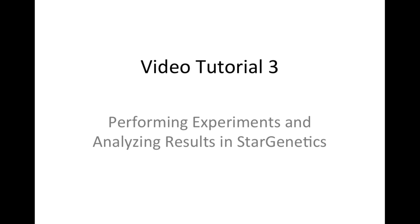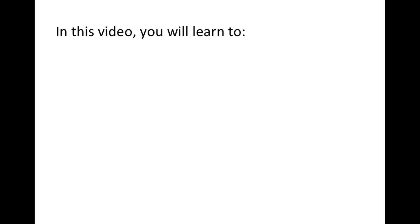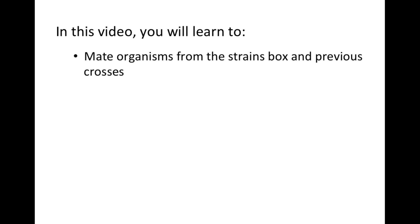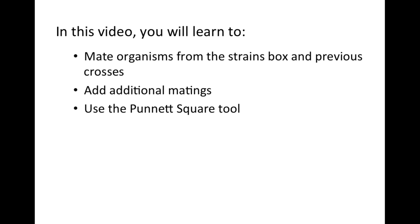Star Genetics video tutorial number three: performing experiments and analyzing results in Star Genetics. In this video, we will learn how to perform a series of crosses between organisms in Star Genetics, and how to analyze the results from these crosses. This will include crossing flies, adding additional progeny to a cross, using the Punnett square tool, and interpreting the results of your experiments to discover the underlying genetics of the trait in question.